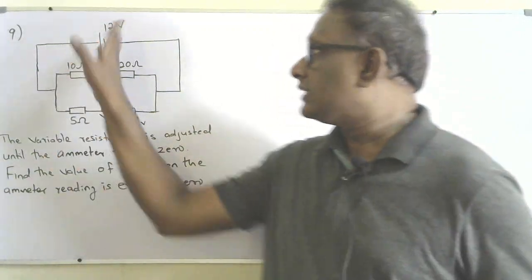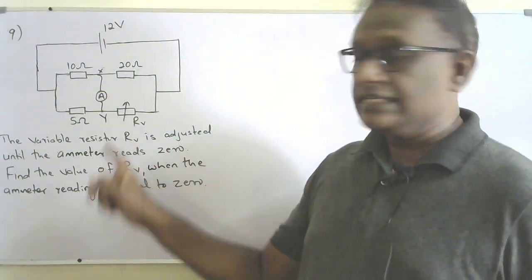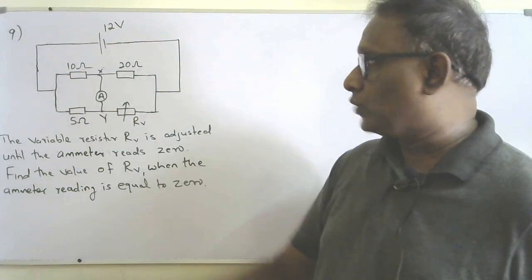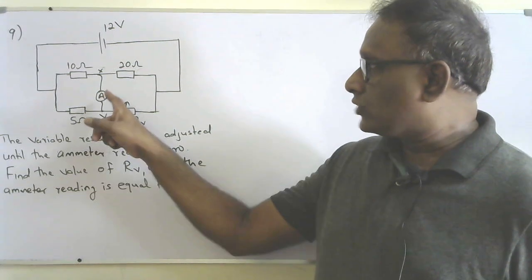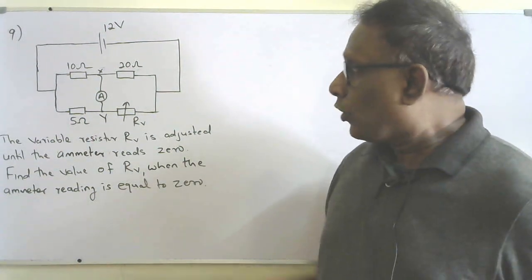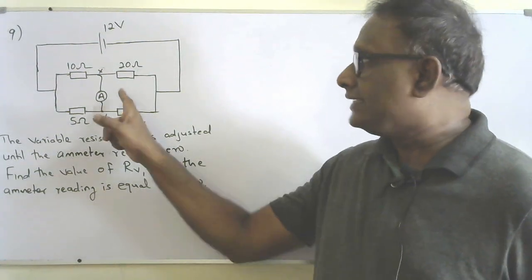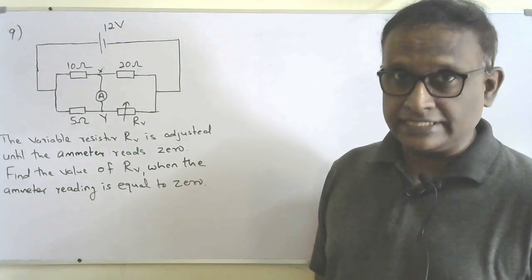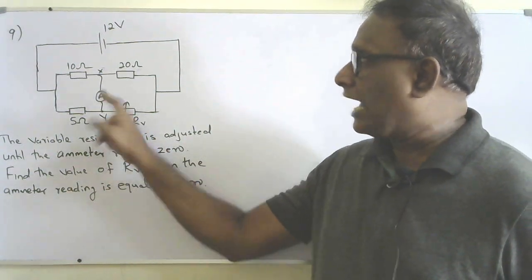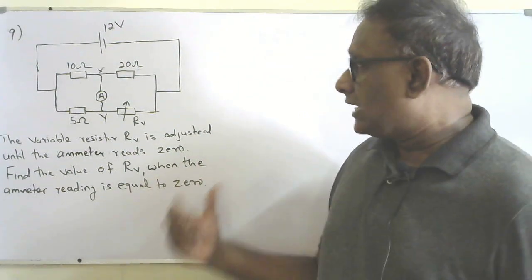This is the ninth question. The circuit is completed and an ammeter is connected between points X and Y as shown in the diagram. It's an ideal ammeter, meaning its resistance is negligible. This is a variable resistance, and Rv is adjusted until the ammeter reading becomes equal to zero. The question is: what would be the value of Rv when the ammeter reading becomes zero?